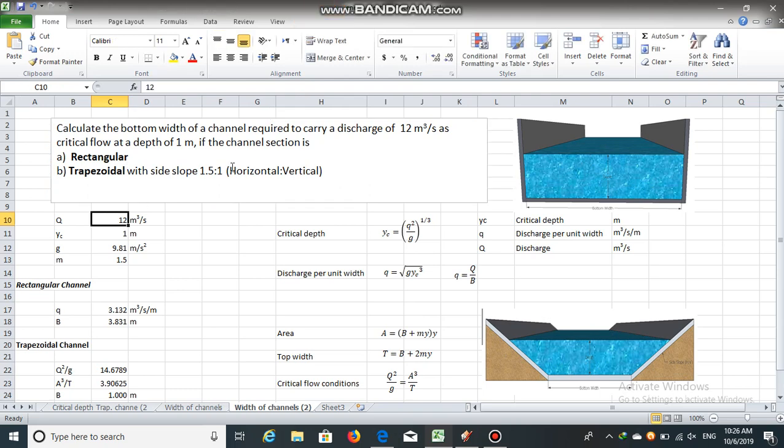The discharge is given as 12 meter cube per second. Critical depth, which corresponds to minimum specific energy, is 1 meter. Acceleration due to gravity g is 9.81 meter per second square, and side slope is 1.5.